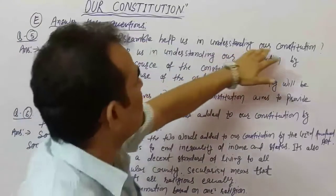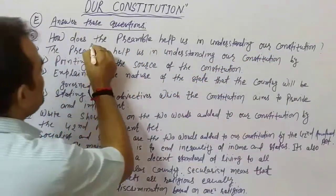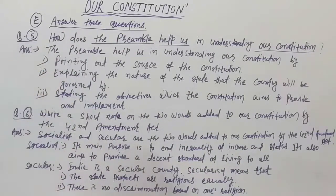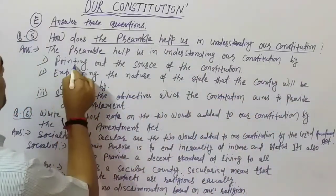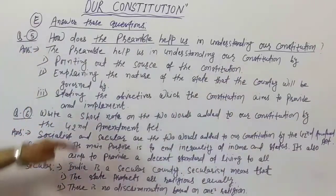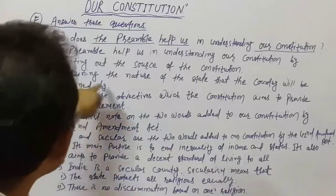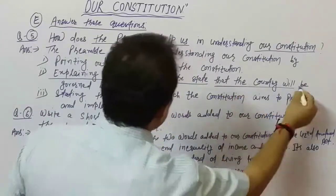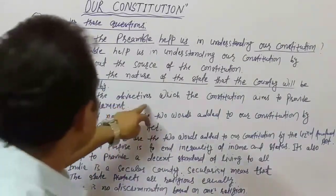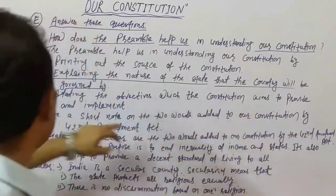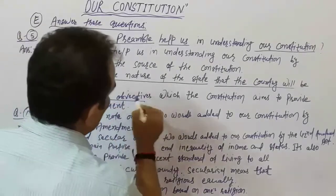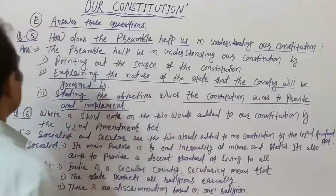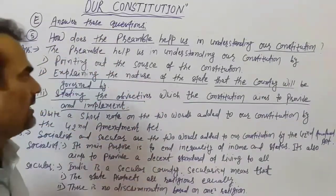How does the preamble help us in understanding our Constitution? The preamble helps us understand our Constitution by: Point 1 — pointing out the source of the Constitution; Point 2 — explaining the nature of the state and how the country will be governed; Point 3 — stating the objectives which the Constitution aims to provide and implement.